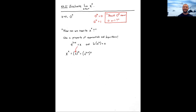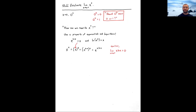Using exponent rules, when you have an outer and inner power you multiply them: (e^(ln x))^x = e^(x·ln x). Notice that the exponent x·ln x is exactly the expression from our earlier example — the limit of x·ln(x) as x → 0⁺, which we found equals 0.